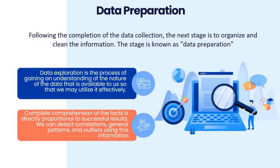Data preparation: following the completion of data collection, the next stage is to organize and clean the information. All of the data are combined, and then the order in which the data are presented is shuffled. This stage may be further broken down into two processes: exploration, which is the process of gaining an understanding of the nature of the data available so that we may utilize it effectively — including understanding properties, structure, and quality of the data — and complete comprehension of the facts, where we can detect correlations, general patterns, and outliers.